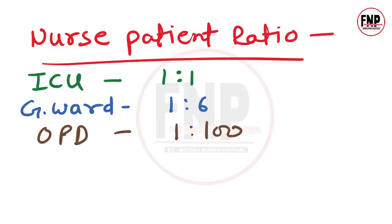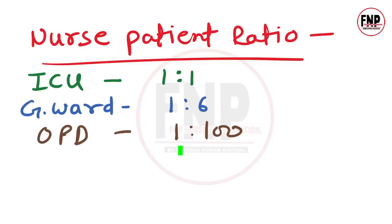Important nurse-patient ratios: ICU mein har ek patient ke liye ek nurse — ratio 1:1. General ward mein 6 patients ke upar ek nurse — ratio 1:6. Outpatient department (OPD) mein 100 patients ke upar ek nurse — ratio 1:100.